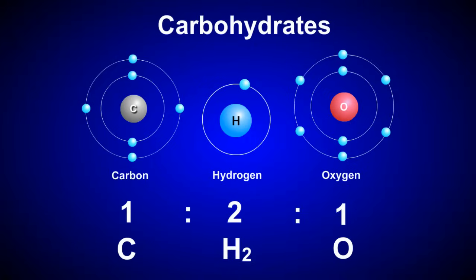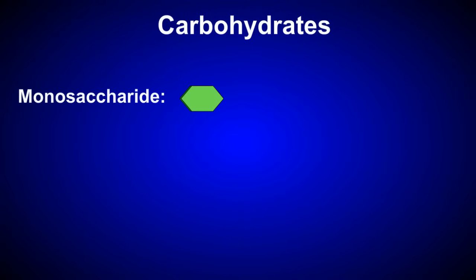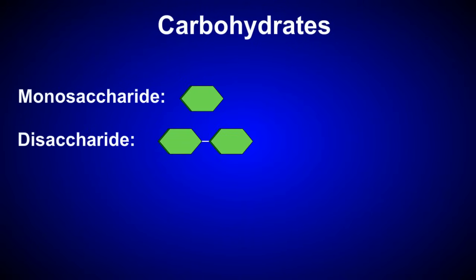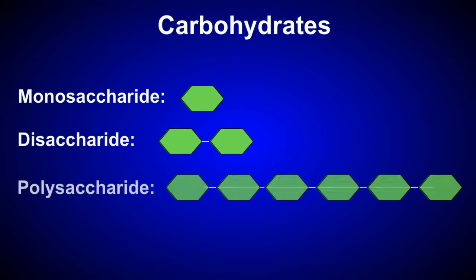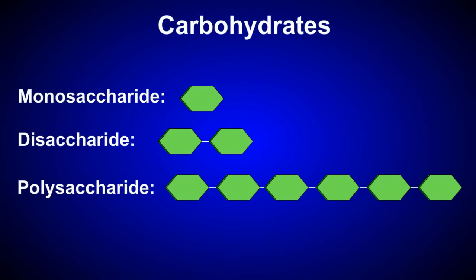Most carbohydrates are characterized as either monosaccharides, disaccharides, or polysaccharides. The term saccharide is just another word for sugar. The prefixes mono, di, and poly refer to the number of sugars in the molecule.